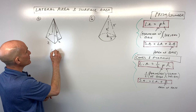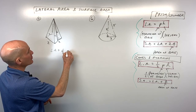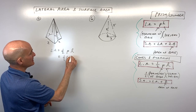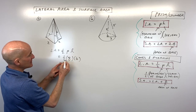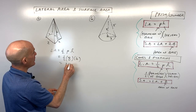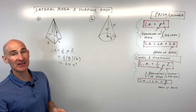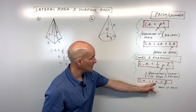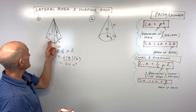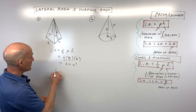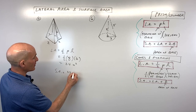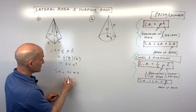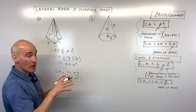For the square pyramid, lateral area equals one-half times the perimeter times the slant height. The perimeter is two plus two plus two plus two, which is eight; the slant height is six. So one-half times eight is four, times six is 24 units squared. For the surface area, we add the area of the base: two times two is four. So 24 plus four gives us 28 units squared total.